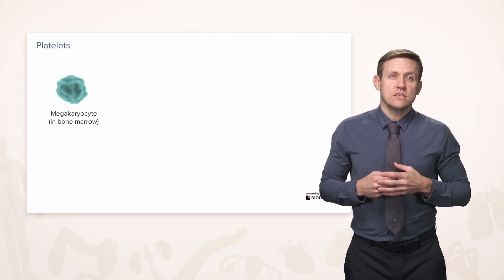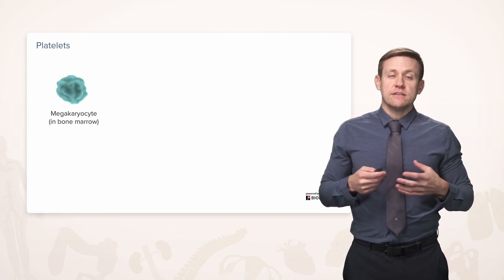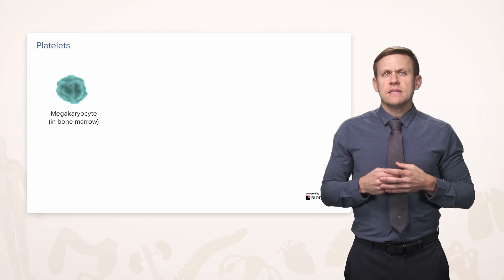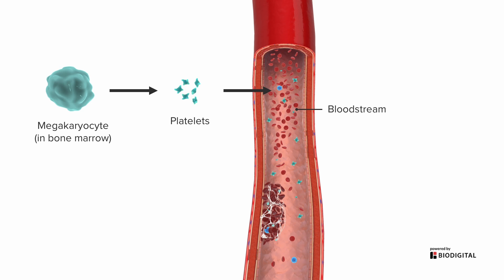Going back to the megakaryocytes — these are very large cells, hence the name megakaryocyte, that live in the bone marrow. Instead of going out into circulation themselves, they pinch off little bits of their cells as platelets, which then go out into circulation. Out in the bloodstream, the platelets act as clotters. So if there's any sort of damage to a blood vessel, in order to prevent too much blood loss, the platelets will form a blood clot in that wall.